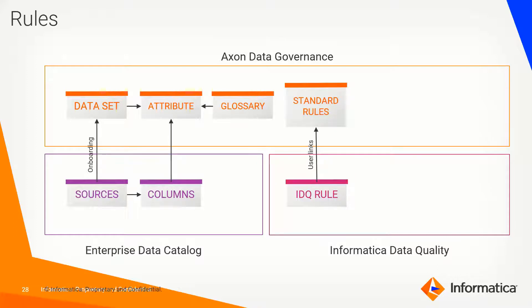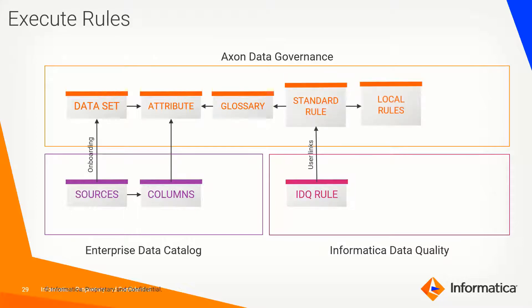What you will be doing is triggering a rule looking for a specific parameter like completeness, validity, accuracy, or timeliness, based on the condition that has to be met for a given column or attribute. You will start your discovery process, create the standard rule, and trigger local rules based on the number of attributes that are there.